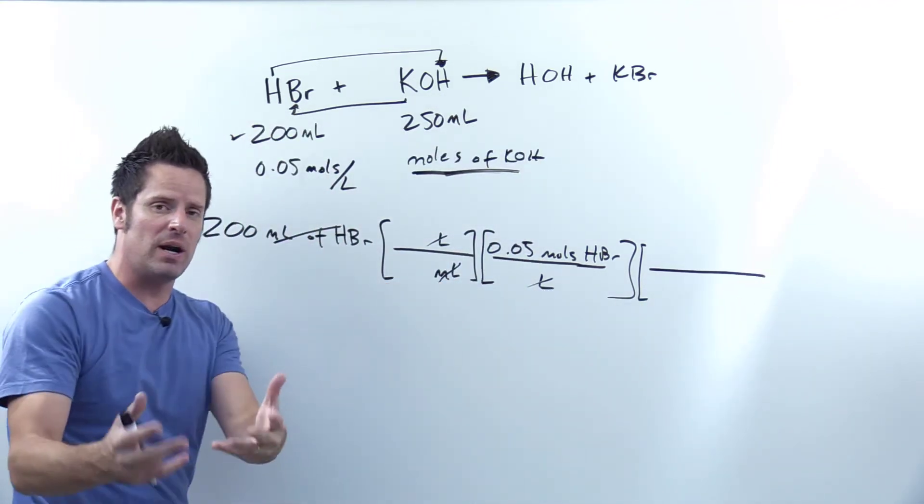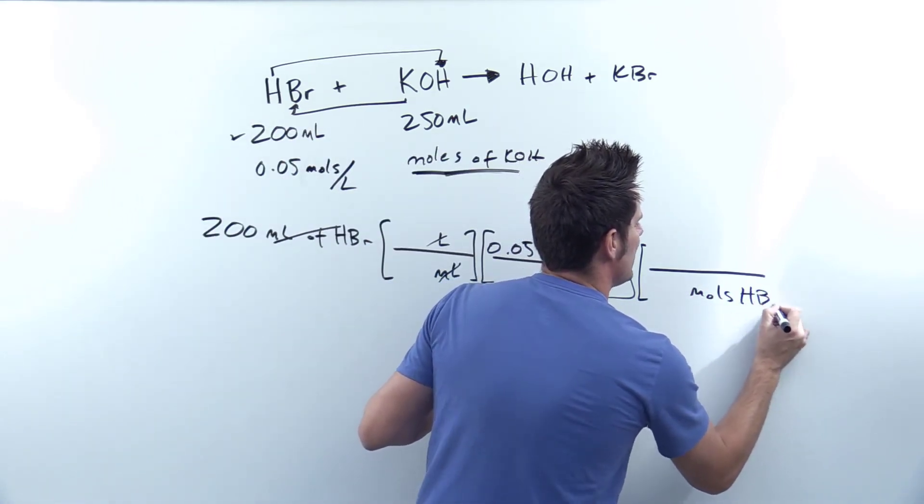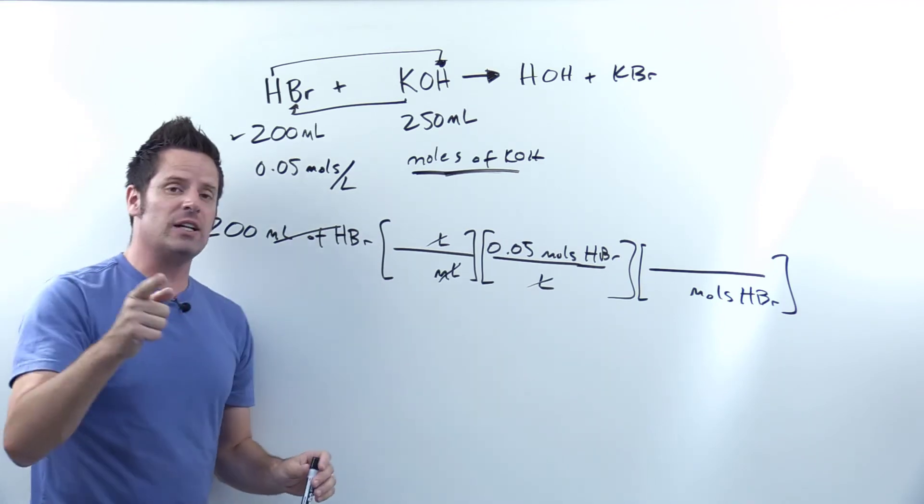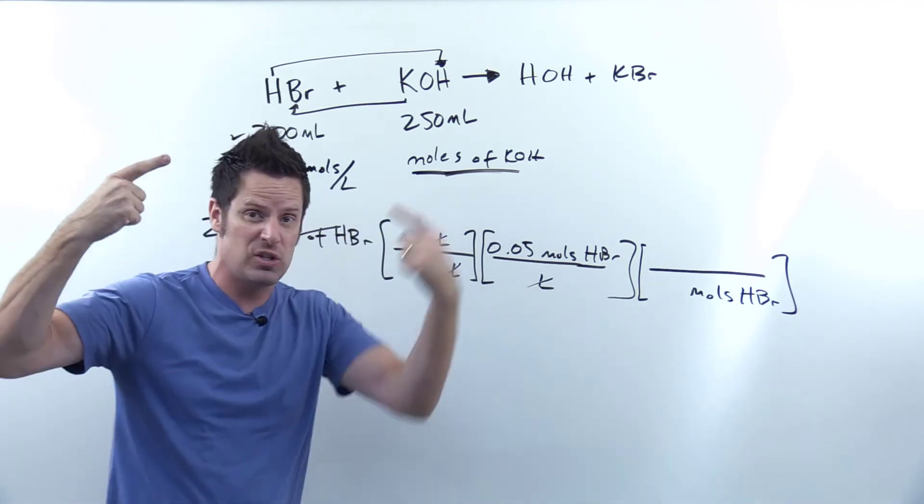What will the units in this denominator be? Yeah, they're going to be the same as the units in the numerator of the previous term. In other words, moles of HBr. Now, is it possible to directly relate moles of HBr to moles of KOH? In other words, can moles and moles touch?